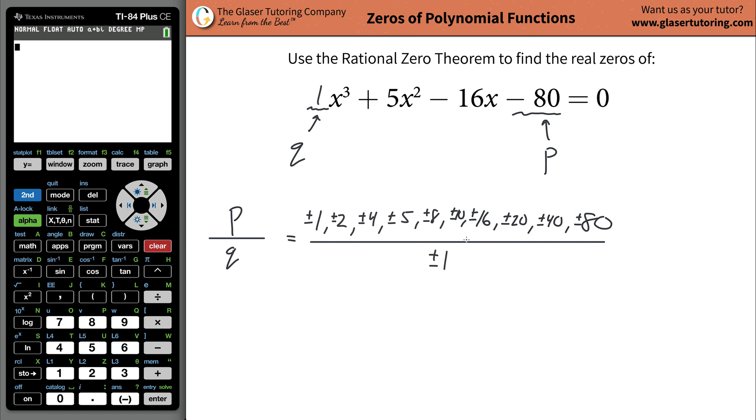So now we have all of these possible now combinations, meaning you could take a positive one divided by a positive one. That would give you a value of one. This is a possible rational zero of this function. You could have also taken though the negative one and divided it by the negative one there, which would have given you the same value of one. That doesn't give us a new value to test, but you could have taken then positive one divided by a negative one. That would have given you a negative one.